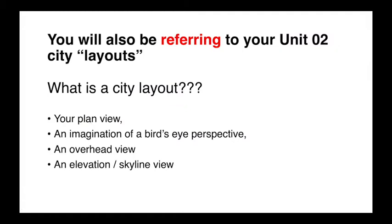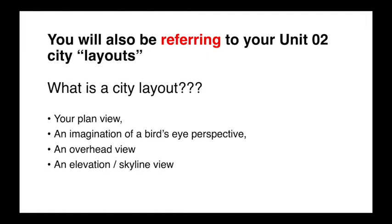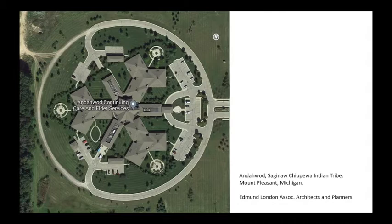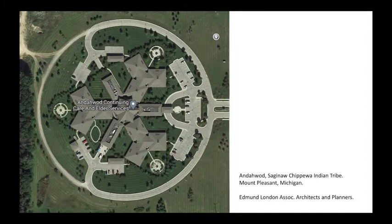We'll also be referring back to our city layouts — the project you just completed, your nine-tile array or nine-tile grid. To relate it more to architecture, landscape architecture, and urban planning, it's interesting to find examples that have distinctive ordering systems. This is an elder care facility right next to the Saginaw Chippewa Indian Tribe, near the Soaring Eagle Casino, about a mile from where I grew up in Mount Pleasant, Michigan. I'm fascinated by how the architecture and planning firm here made reference to geometries often found across Saginaw Chippewa Native art.